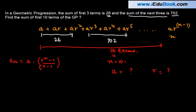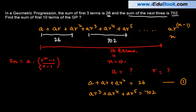What we know is that the sum of these three terms is equal to 26. So I will write a + ar + ar² = 26. This is the first thing given to me. And the second thing given is ar³ + ar⁴ + ar⁵ = 702.